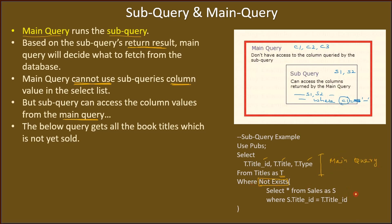For the NOT EXISTS condition, we have: SELECT * FROM sales AS S WHERE S.title_id = T.title_id. Here the subquery is accessing content from the main query — the main query's column T.title_id — and matching it with the subquery's data. There are two tables involved: titles (aliased as T) and sales.